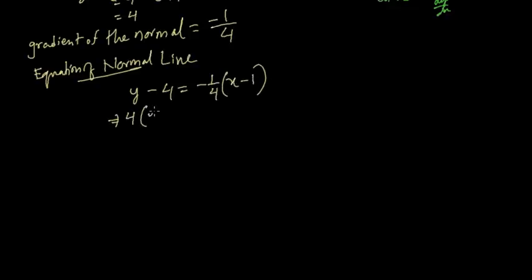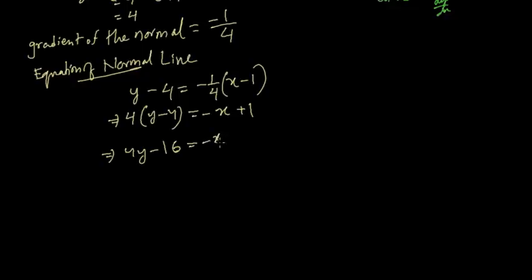Cross-multiplying to get integer coefficients: 4(y - 4) = -(x - 1), giving 4y - 16 = -x + 1. Simplifying: 4y + x = 17. It is recommended to write it with integer coefficients rather than fractions. That was the first question.